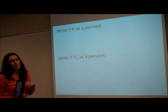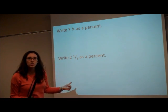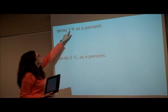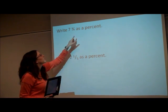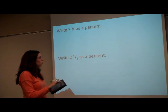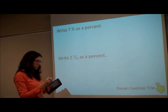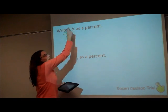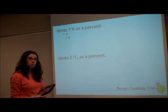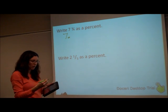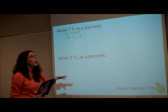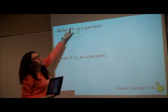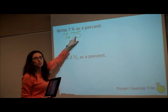Now let's go the other way. We have a mixed number that we want to write as a percent. There are a couple of different ways you can look at this. What I would do is first change it to a decimal. So for 7 and 3-fourths, to change that to a decimal, I know it's going to be 7 point something. So I need to change the 3-fourths to a decimal by taking 3 divided by 4, and you get 0.75. So 7 and 3-fourths as a decimal is 7.75.